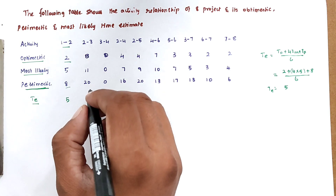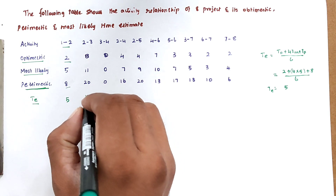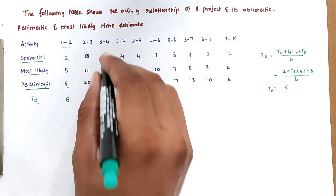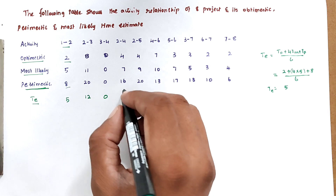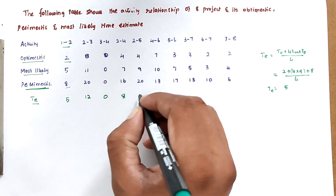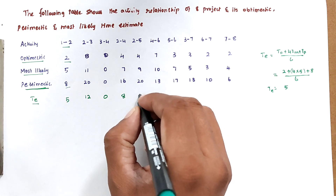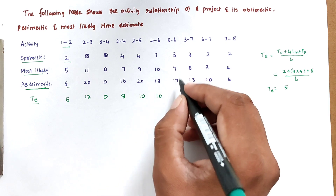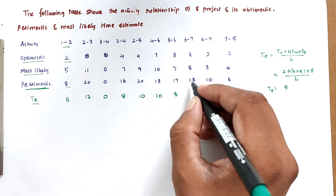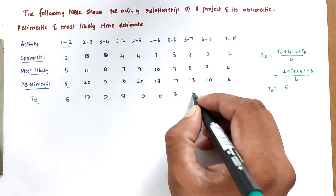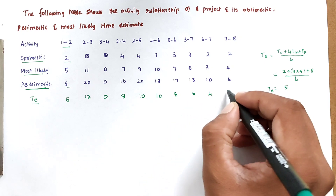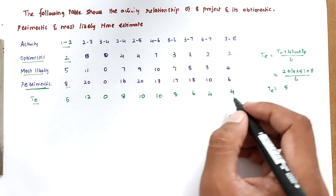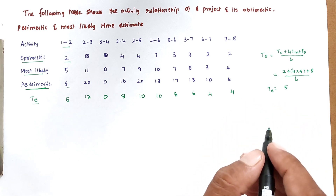Calculating TE for all activities: 1-2 = 5, 2-3 = 12, 3-4 = 0 (dummy activity), 2-4 = 8, 2-5 = 10, 4-6 = 10, 5-6 = 8, 3-7 = 6, 6-7 = 4, and 7-8 = 4.